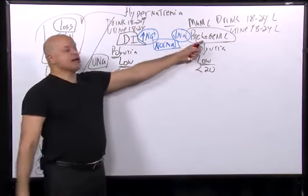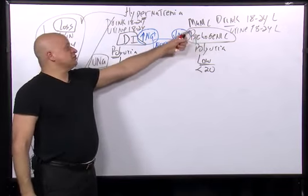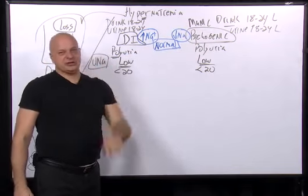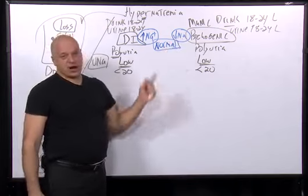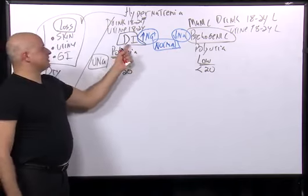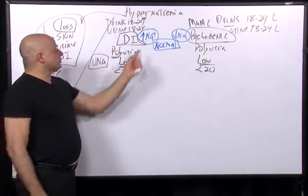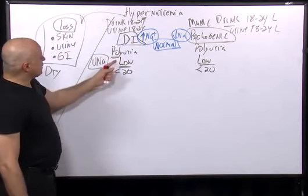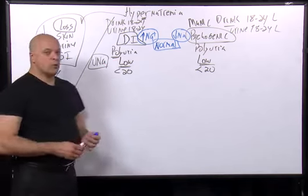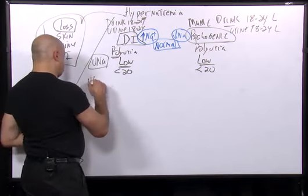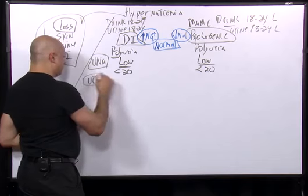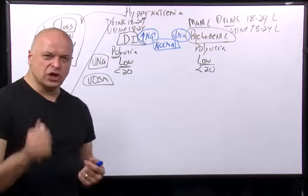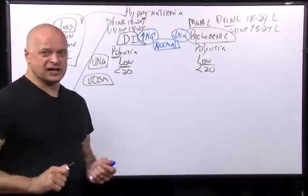Since thirst stays intact, as you're urinating, the body makes you replace the water by drinking, so you can actually have a normal serum sodium in both conditions. In psychogenic polydipsia, you'll continue to urinate until you reach the maximum diluting capacity, and then the sodium will drop. In diabetes insipidus, the sodium stays normal until you have no access to water.